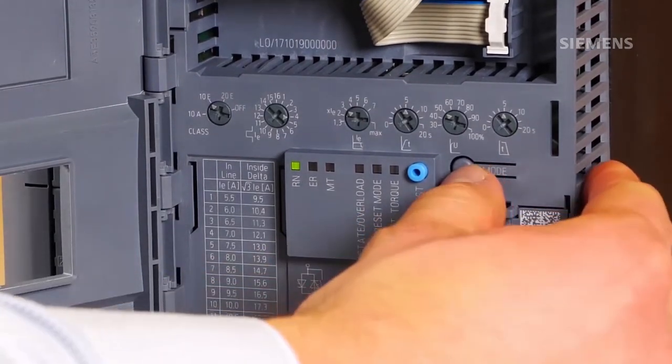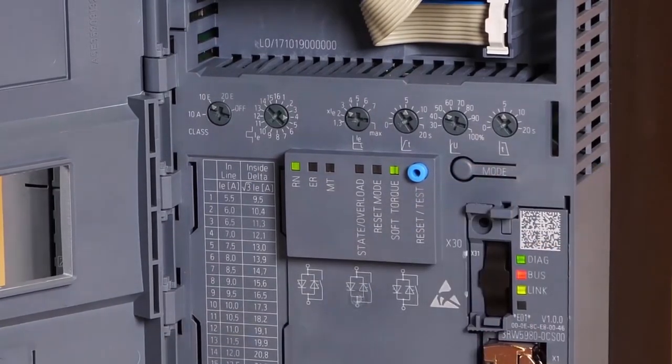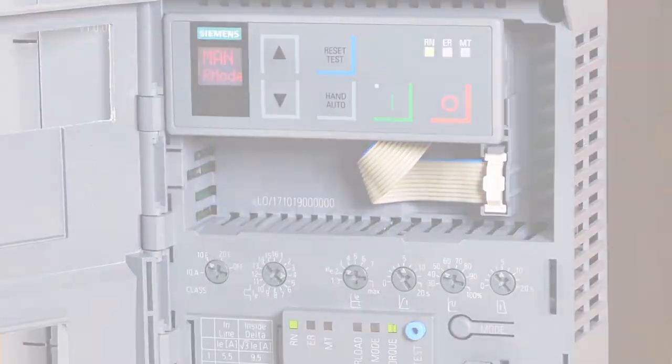Additionally, we activate the soft torque function via the mode button. You see the set function according to the LED coating. Siemens.